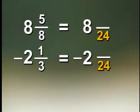3 times 8 is 24. Notice I've written the whole numbers, 8 and 2, and I've put that subtraction symbol in to remind me that I'm subtracting, because otherwise I might be tempted to add.